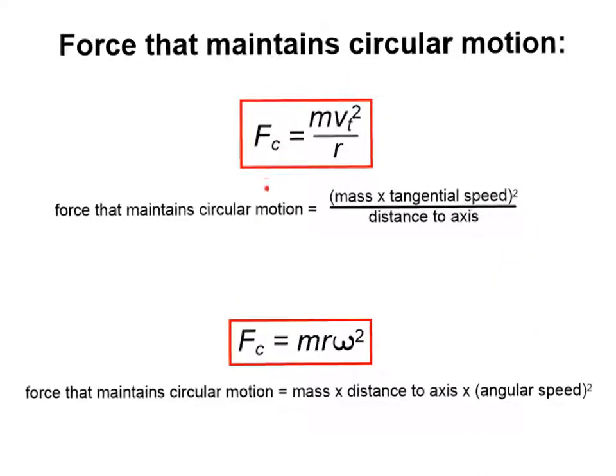And voila, here we have that formula. The force that maintains circular motion is equal to mass times the tangential velocity squared divided by r, the distance to the axis.